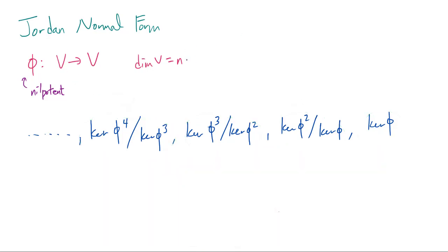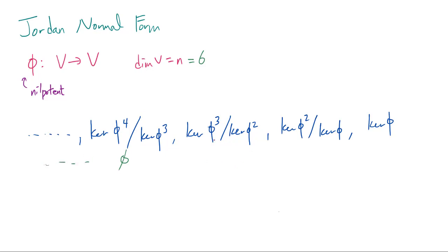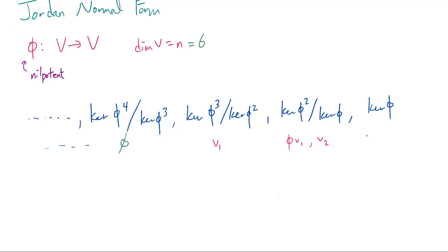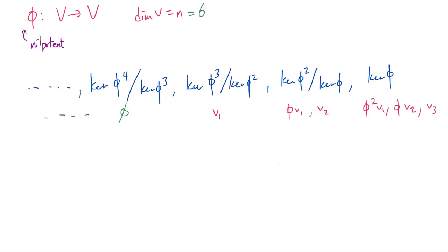Let's apply this with N equal to 6. Suppose that up to kernel of phi to the 4th modded by kernel of phi cubed the only vector in the quotient space was zero, but starting at kernel of phi cubed modded by kernel of phi squared we have a basis of V1 mod kernel of phi squared. Taking phi(V1), and supposing the dimension of the next space was actually 2, there is some vector V2 such that phi(V1), V2 forms a basis there.